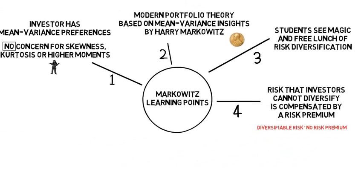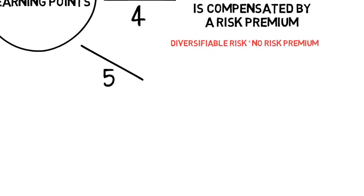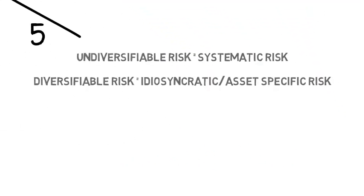Learning point 5: Undiversifiable risk is also called systematic risk. In contrast, diversifiable risk is called idiosyncratic risk or asset-specific risk.